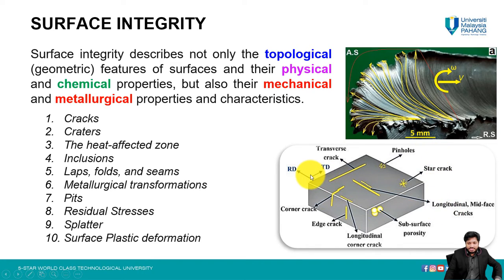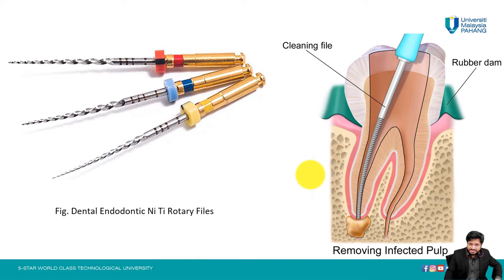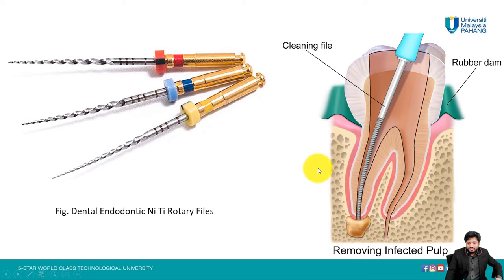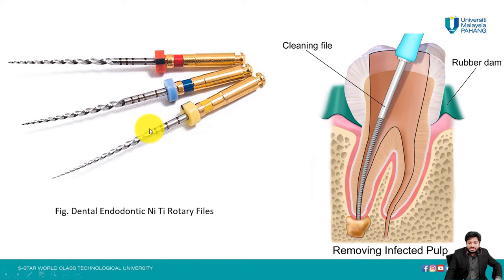To understand why surface integrity is important, consider the example of a root canal. Bacteria form and the infected pulp must be removed. Files made of nickel-titanium alloy — a shape memory alloy that is highly deformable and retains its shape — are used. These files have the shape of a drill bit and are screwed inside manually to remove the dead material and pulp.